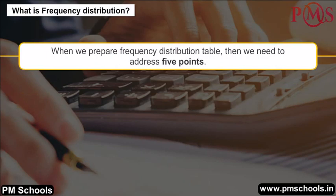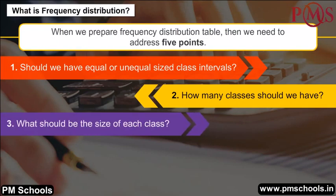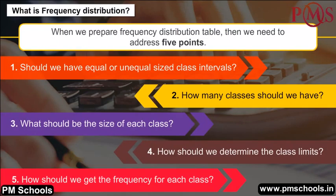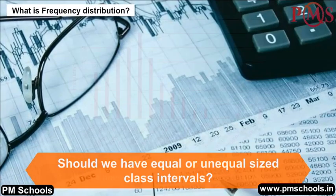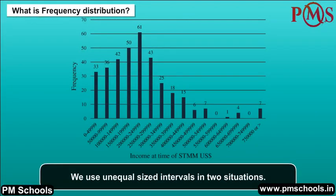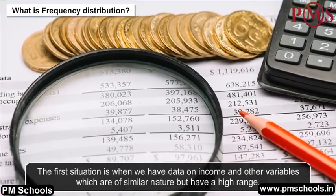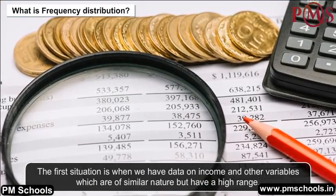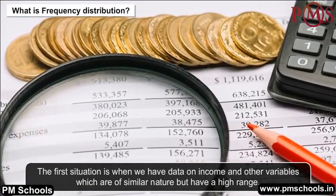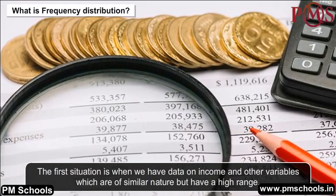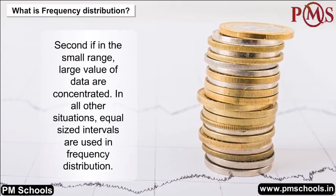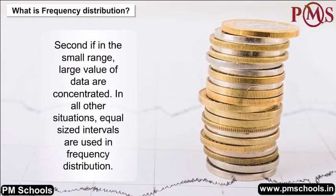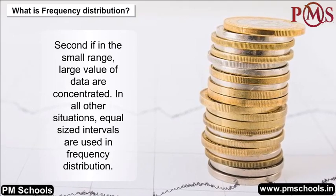How to prepare a frequency distribution table: When preparing a frequency distribution table, we need to address five points. First, should we have equal or unequal sized class intervals? We use unequal sized intervals in two situations: when we have data on income or similar variables with a high range, and when large values of data are concentrated in a small range. In all other situations, equal sized intervals are used.